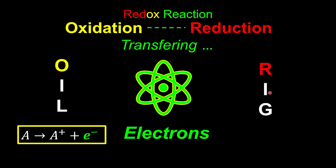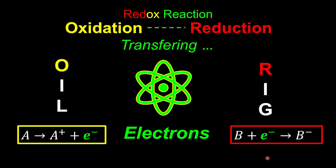Meanwhile, reduction is the gain of electrons. This is why we have OIL RIG: oxidation is the process where we lose the electrons, and reduction is the process where we gain the electrons. Imagine you are the one who receives a lot of negative thoughts — you become a negative person. This is why we write the ionic equation for reduction showing a gain of charge. So one loses the electrons and one is gaining the electrons, and this process occurs at the same time — this is why we call it a redox reaction.